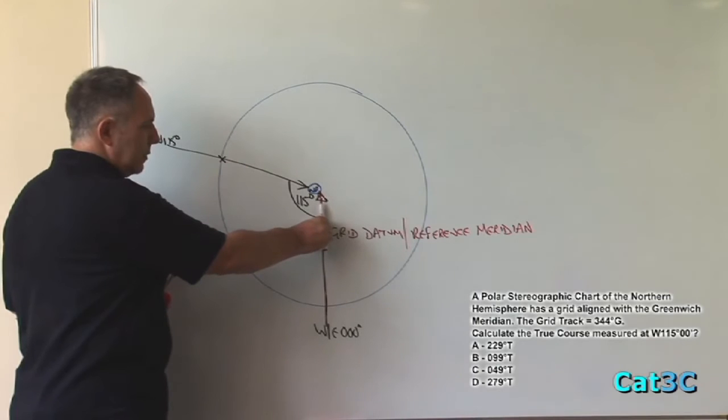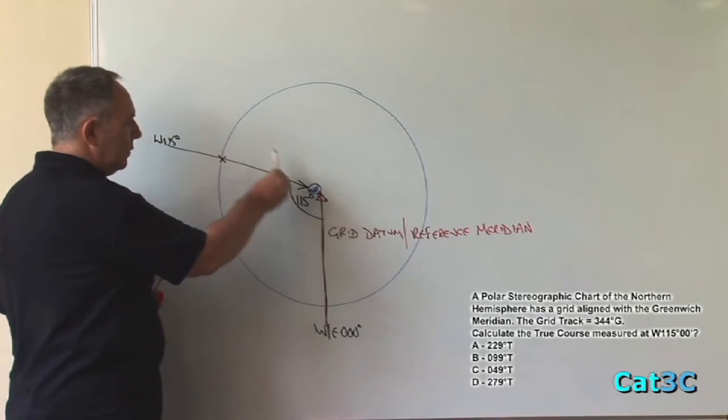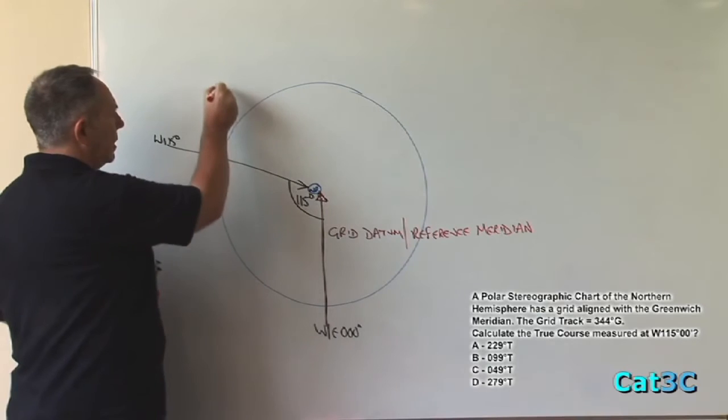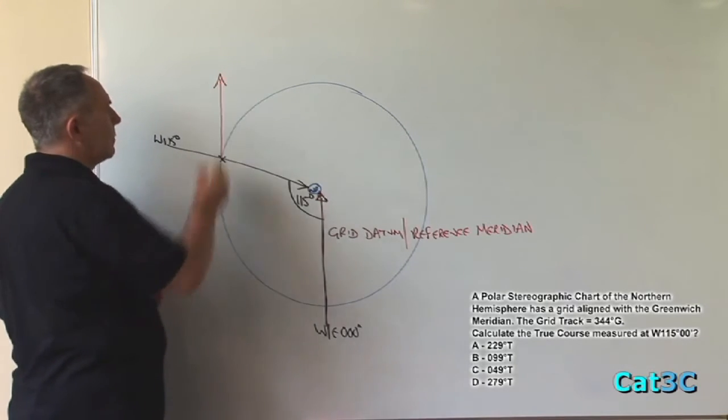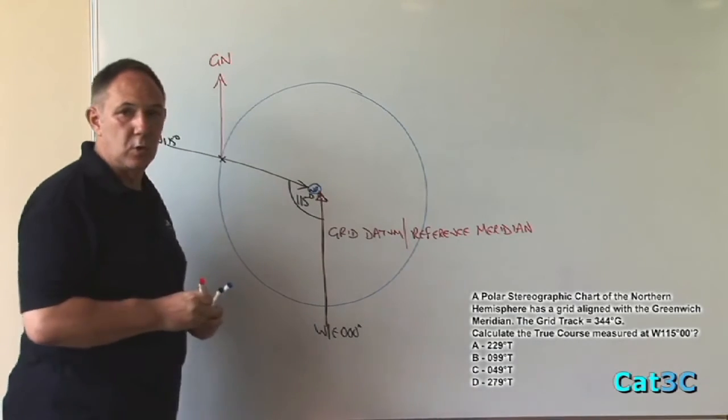So if I take the grid meridian from there and move it across to 115 degrees west, it would be parallel to it and pointing in the same direction which will be identified as grid north.